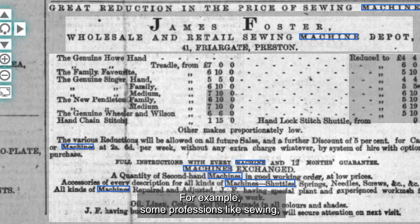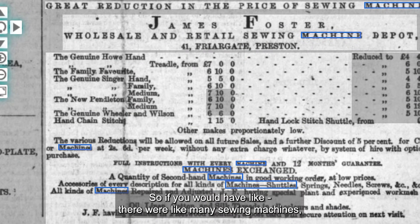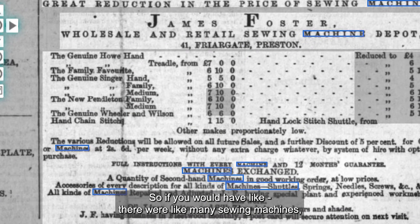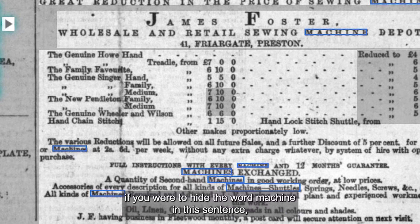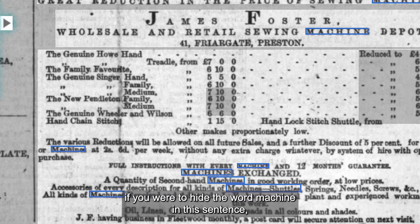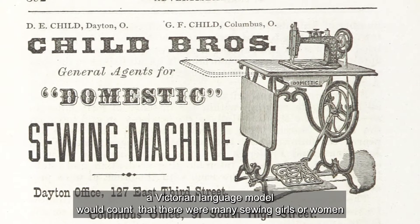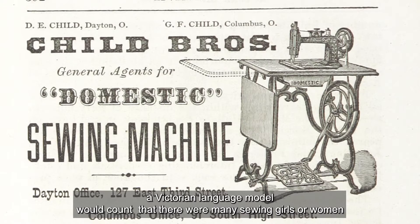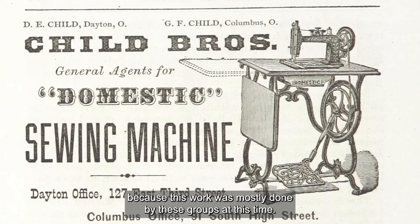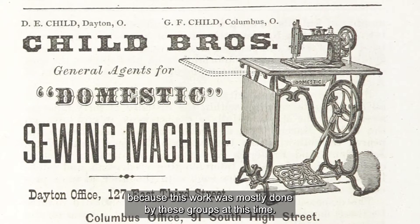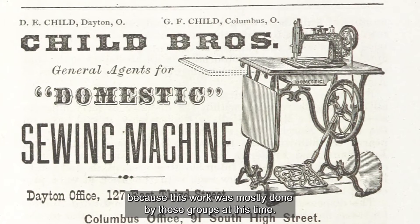For example, some professions like sewing — if you would have 'there were many sewing machines' and you hid the word 'machine' in that sentence, a Victorian language model would predict 'there were many sewing girls or women,' because this work was mostly done by those groups at that time.